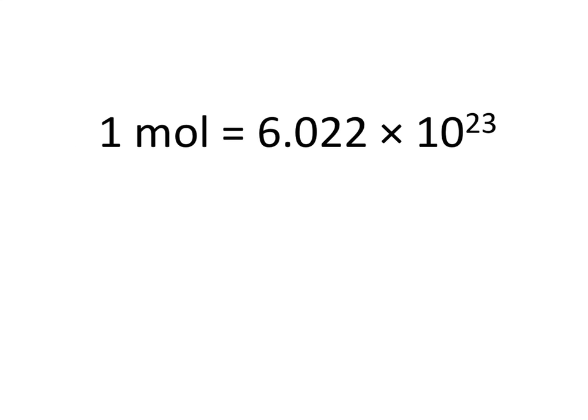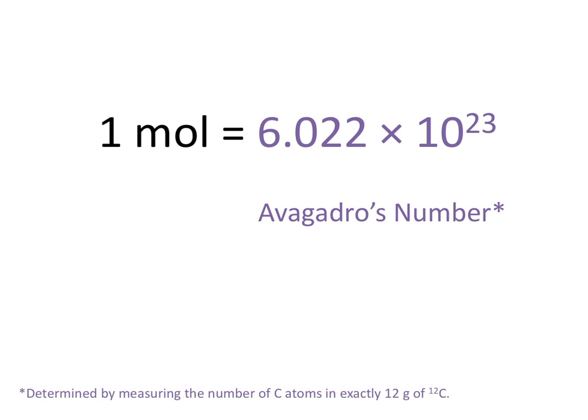1 mole is equal to 6.02 times 10 to the 23rd, and this number is referred to as Avogadro's number. Avogadro's number was determined by measuring the number of carbon atoms in exactly 12 grams of the isotope carbon-12.